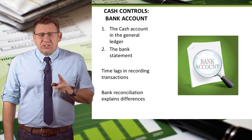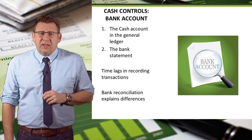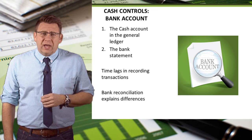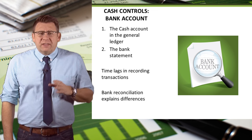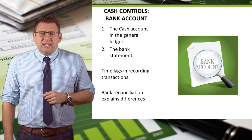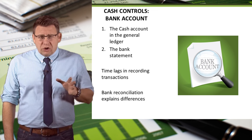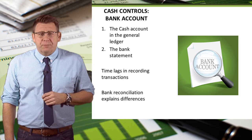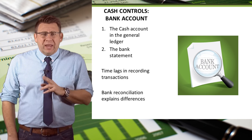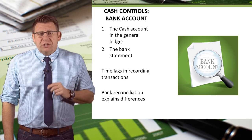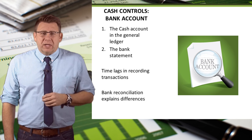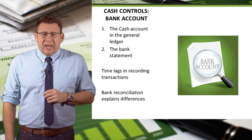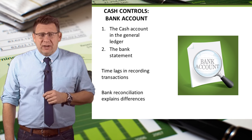The first is the cash account in the company's general ledger, commonly referred to as the book. The second is the bank statement, which shows the cash, receipts, and payments that have cleared the bank. The book and the bank statement usually show different cash balances, and differences arise because of time lags in recording transactions.